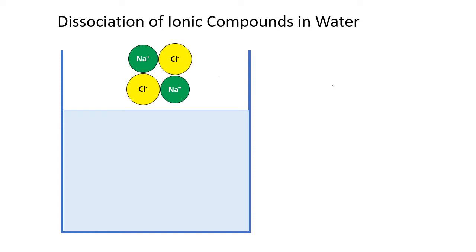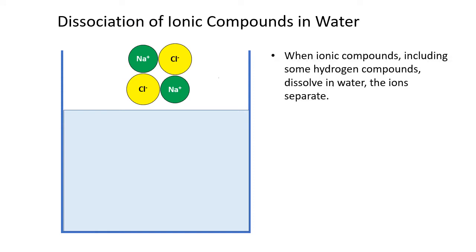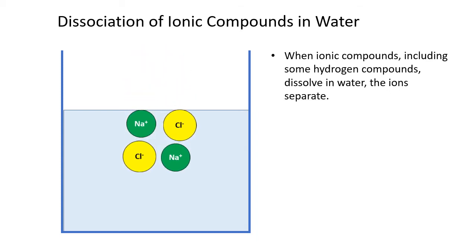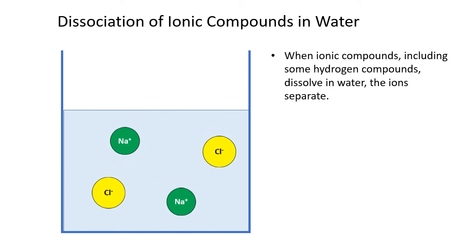First, let's review what happens when ionic compounds are dissolved in water. When an ionic compound dissolves, the ions separate. Remember, that can include some hydrogen compounds too, where the hydrogen is taking the place of a metal. Here's a small sodium chloride crystal — let's drop it in the water. So in that solution, we don't have sodium chloride particles. We have independent positive sodium ions and negative chloride ions floating around.